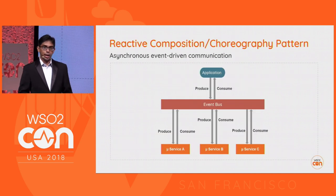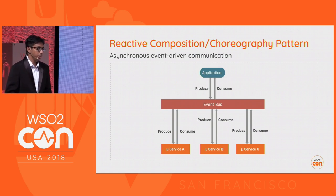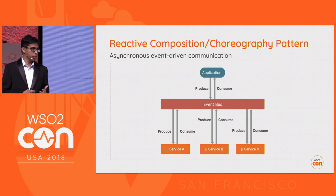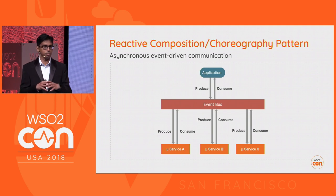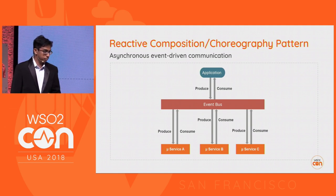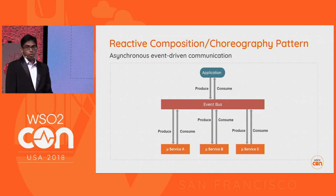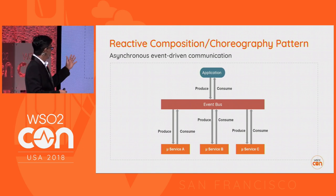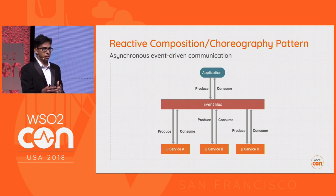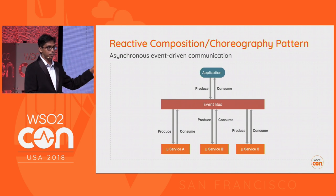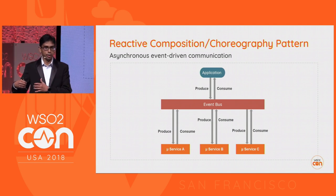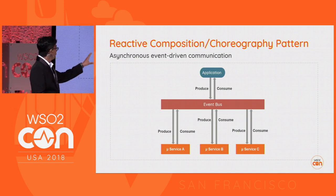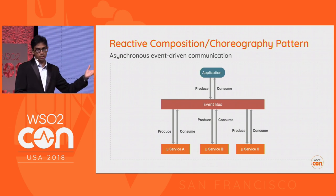The second pattern is reactive composition. In this architecture, there is no composite service concept. Instead, services communicate with each other using an event bus such as Kafka or a message broker like an AMQP broker. For example, in an order processing system, when you place an order it goes as a message published to a particular topic, and there can be multiple subscribers — maybe a shipment application or an accounting application — which have subscribed to that topic. Kafka is commonly used for event bus implementation.